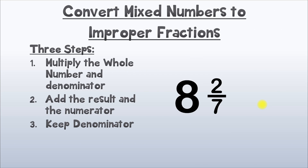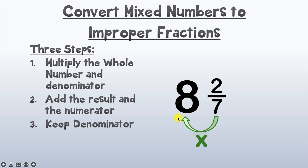Here's our last example. Step number 1: multiply the whole number and the denominator. Our denominator is 7 and our whole number is 8. When we multiply 7 times 8, we get 56.